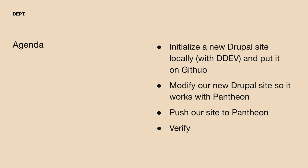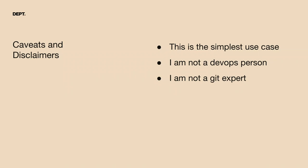We're going to start with a site that was already initialized and had a few changes made to it. We'll create a new GitHub repository, put the site on there, make a couple of changes so it works with Pantheon — Pantheon needs specific settings files for things like database connections. Then we'll push our site to Pantheon using GitHub Actions. At the end we'll verify that when we commit to our main branch in GitHub, we automatically see those changes appear on Pantheon.